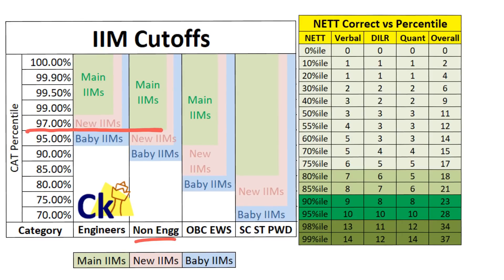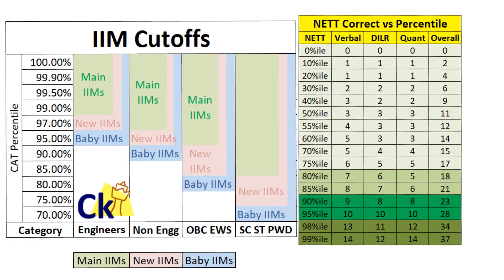For non-engineers, 97 percentile may get you the main IIM calls. More precisely, 97.5 with a good academic record and you can start expecting main IIM calls. 95 percentile for new IIMs and 90 percentile for baby IIMs — IIM Amritsar, IIM Nagpur — all these can call you at 90-91 as well. So for all non-engineers in the open category, your magic number stands at 97-98 percentile, which is 34 net correct. Sectional cutoffs must be maintained: 95 percentile and 90 percentile. So 23, 28, 34 net correct — you can clear the cutoff.